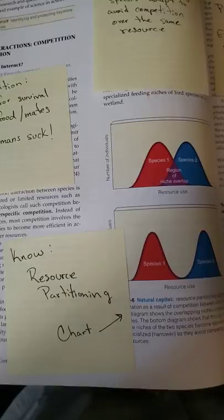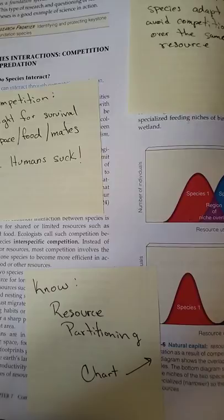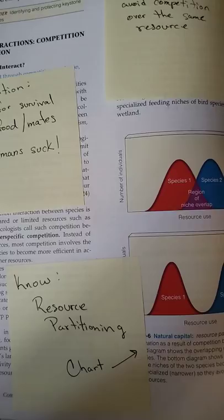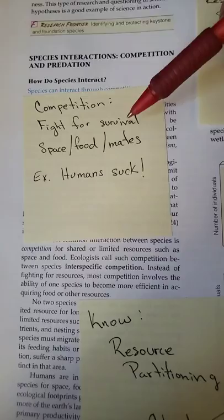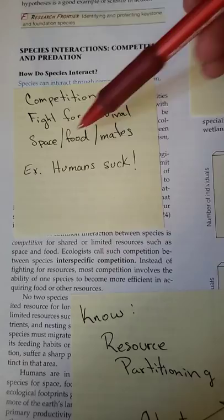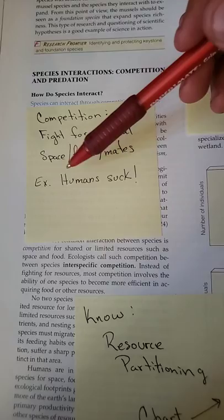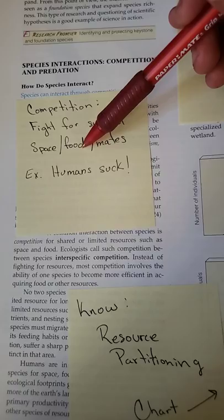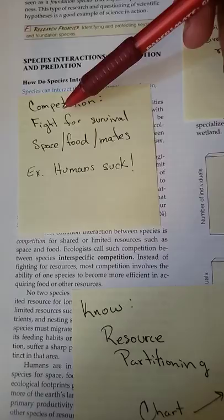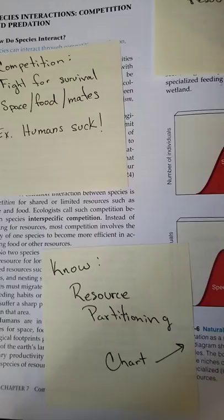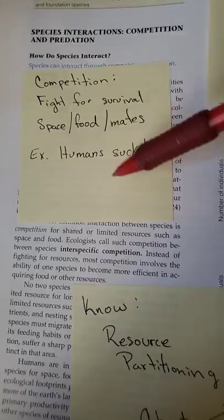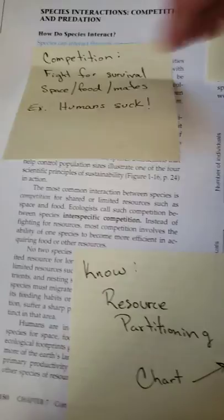All species always need either specific space or use specific mating rituals. There's competition — the fight for survival over space, food, and mates. Humans are terrible at this because we overindulge, especially with space and food. We don't know anything about scarcity or how not to encroach on certain spaces — we basically overrun the entire Earth without caring what's in the way.